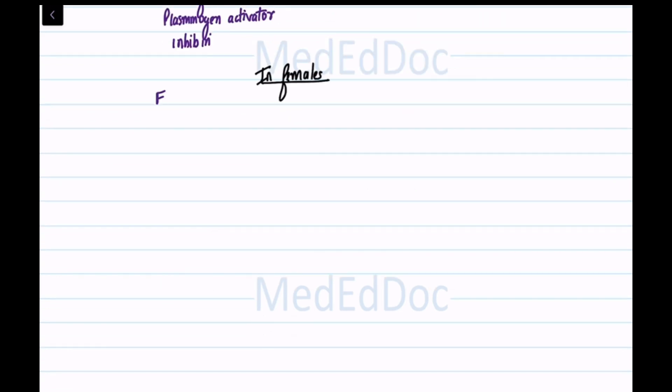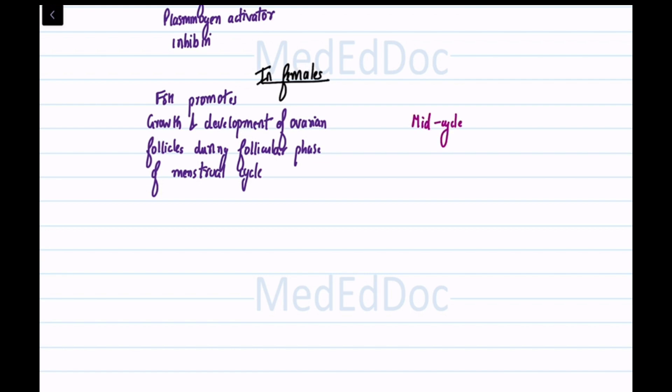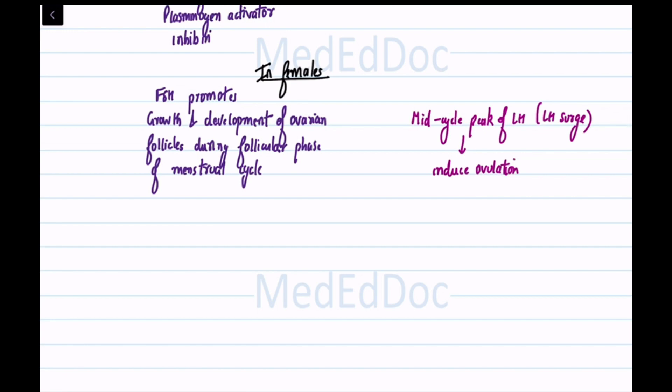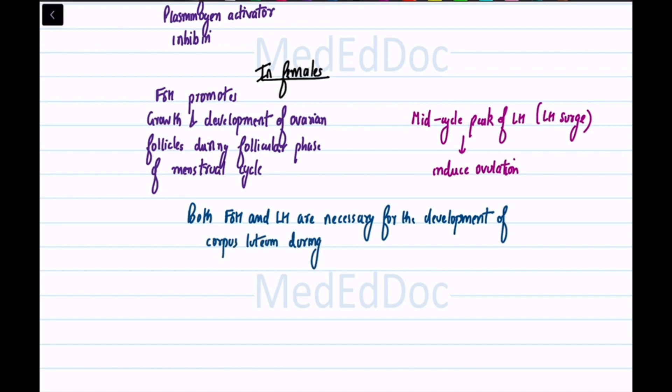In females, FSH promotes the growth and development of ovarian follicles during the follicular phase of the menstrual cycle. The mid-cycle peak of LH (LH surge) induces ovulation. Both FSH and LH are necessary for the development of the corpus luteum during the luteal phase of the menstrual cycle.